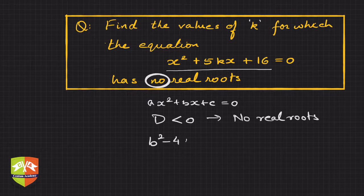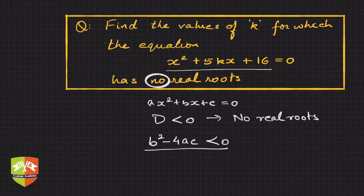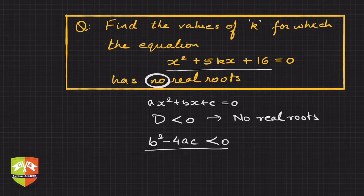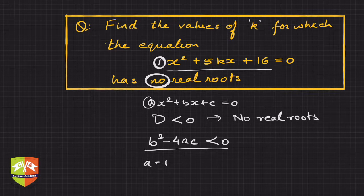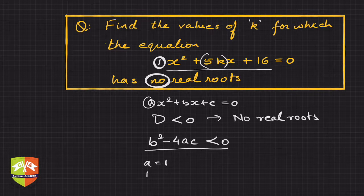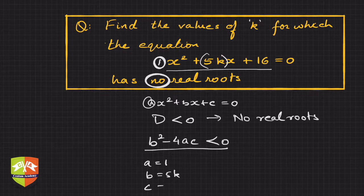D is b² minus 4ac. This is the condition. So let's start. Here a = 1, and 5k happens to be b, so b = 5k.